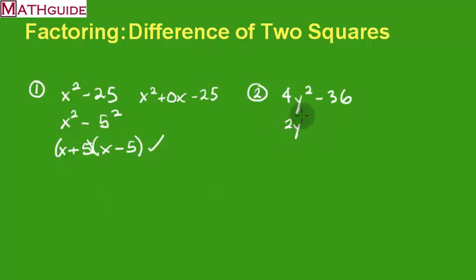I'm taking 2y times 2y, or in other words, 2y squared is 4y squared. 36 is really 6 squared. See? It's a difference of two squares. It fits the same pattern, just like our last problem.